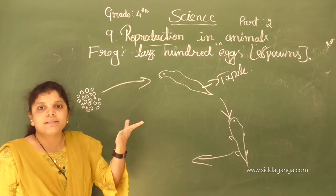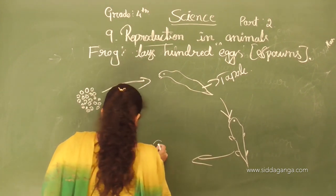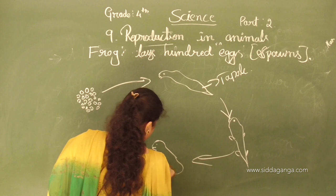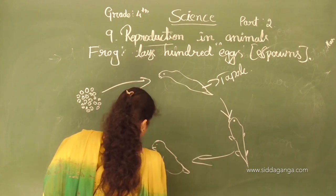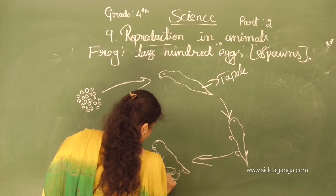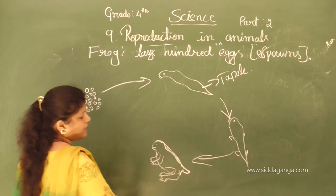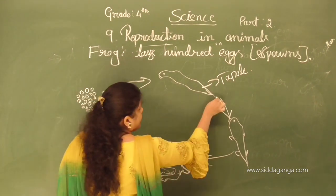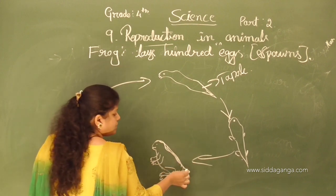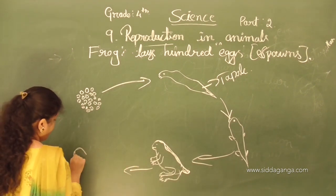The tail will reduce. Legs, forelimbs and hindlimbs grow. The frog starts to develop. The small tail gradually reduces and the limbs start to grow. Totally the tail disappears and the legs grow — the frog is fully developed.